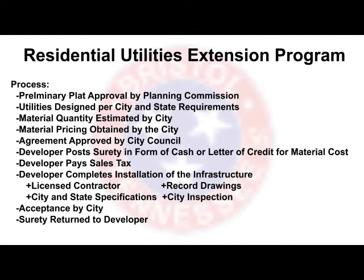Once we have that pricing, we can take an agreement to city council for their approval. Once that is approved, you'll post a surety in the form of cash or a letter of credit for the material cost — that's the six-inch-and-larger water and eight-inch-and-larger sewer materials. You also have to pay the sales tax, which is state law. Once all approvals are in place and the cash surety is posted, you'll complete the installation of the infrastructure.